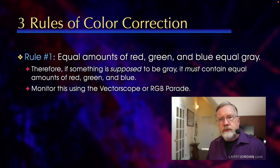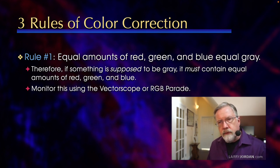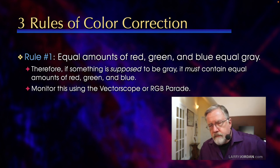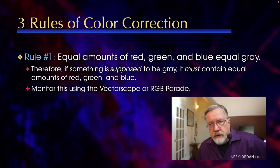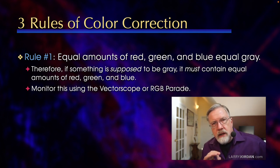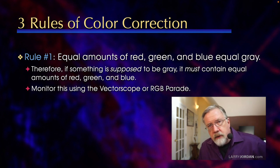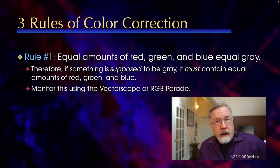There are three rules of color correction. The first rule is equal amounts of red, green, and blue equal gray. But what makes it magical is if something is supposed to be gray, then it must contain equal amounts of red, green, and blue.